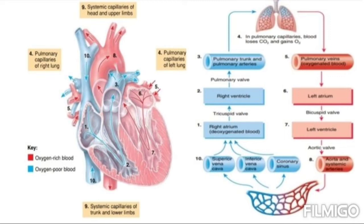The right side of the heart receives all the dark red deoxygenated blood returning from the systemic circulation. Blood ejected from the right ventricle flows into the pulmonary trunk, which branches into the pulmonary arteries carrying blood to the right and left lungs. In the pulmonary capillaries, this blood unloads CO2, which is exhaled, and picks up oxygen from the inhaled air.